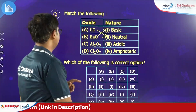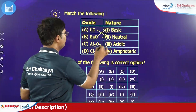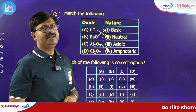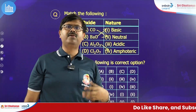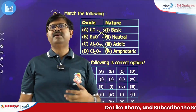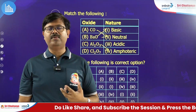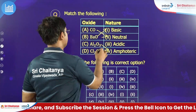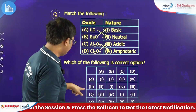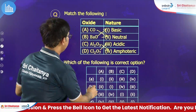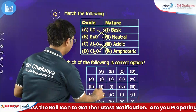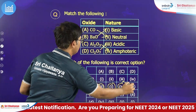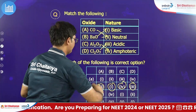Keep that in mind. Therefore Al2O3 is amphoteric, and Cl2O7 — chlorine heptoxide — is a very highly acidic compound; it is an acidic oxide. So looking at the matching: A-2, B-1, C-4, and D-3. This is the right option.